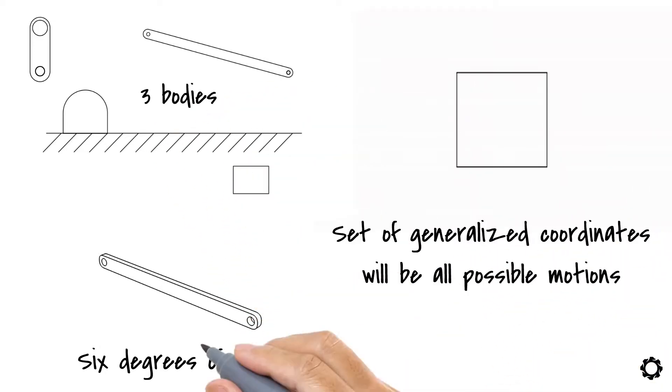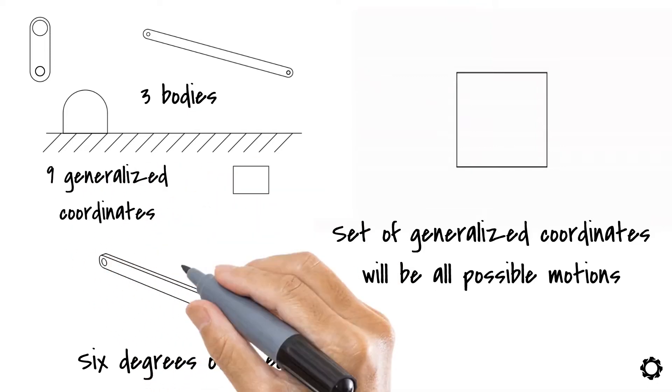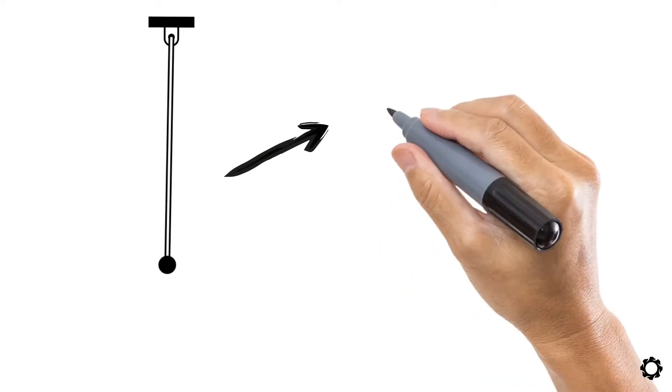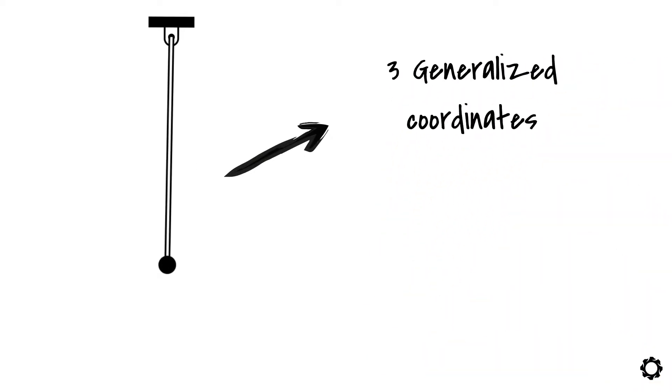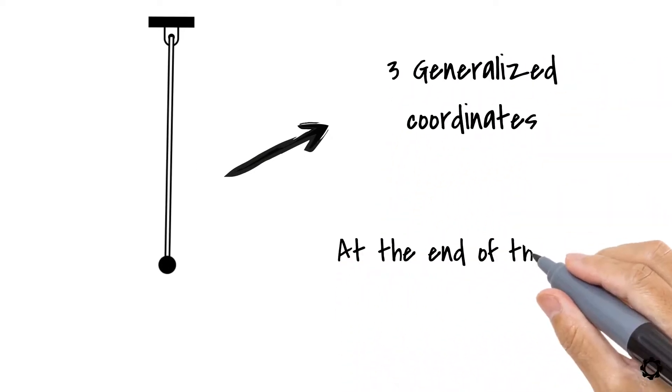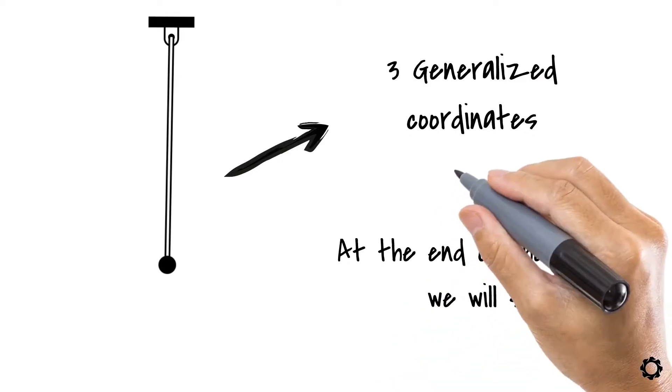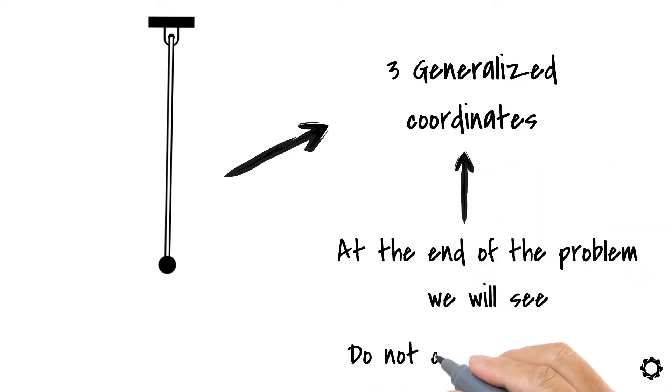If you have three bodies, you'll end up with nine generalized coordinates. If we are talking about the simple pendulum, then we will have three generalized coordinates. And at the end of the problem, we will see that those generalized coordinates do not change with time.